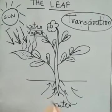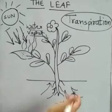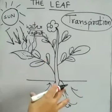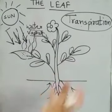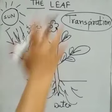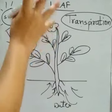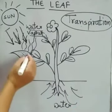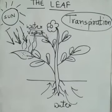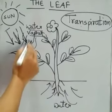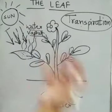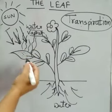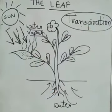A plant keeps on absorbing water from the soil, and due to this, a lot of water collects in the body of the plant. Some of the water is used up during the process of photosynthesis. The extra water present in the body of the plant is given out constantly as water vapor through the tiny pores called stomata of the leaves. The evaporation of water from the leaves of plants is called transpiration.